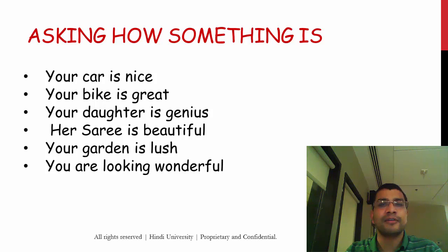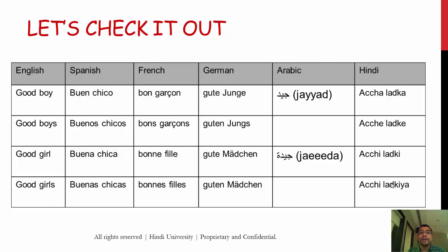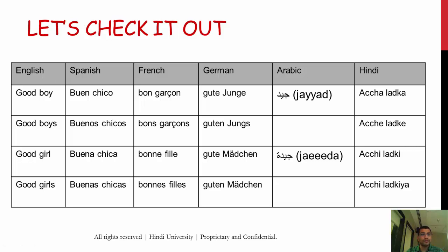Let's look at a comparative analysis across six languages. In English, whether you say 'good boy,' 'good boys,' 'good girl,' or 'good girls' — masculine, feminine, singular, plural — the adjective 'good' never changes. Even when you change gender or number, English adjectives stay the same. As we move to other languages, you'll see that's not the case.